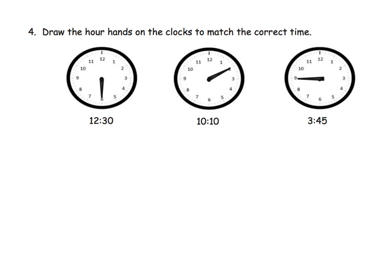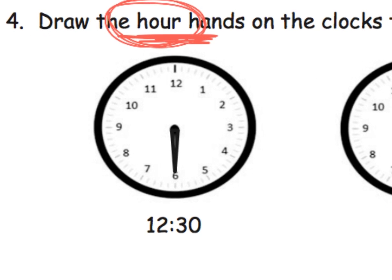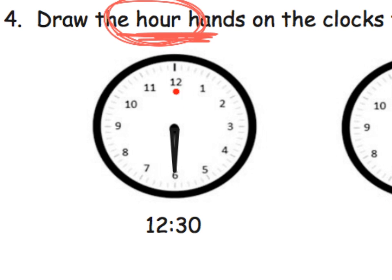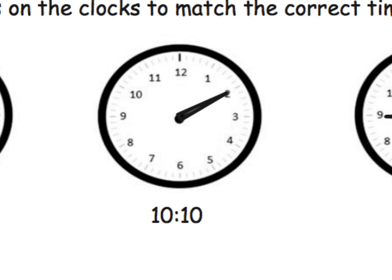Now we're doing more of the same but at a slightly higher level — this is saying draw the hour hands. If the minute hand is at the 30 and it's supposed to be 12:30, the hour hand would ordinarily point to the 12, but we're halfway through the hour, so the hour hand is going to face somewhere in the middle between the 12 and the 1. And here's our 10:10 — we know the hour hand is going to be at the 10.